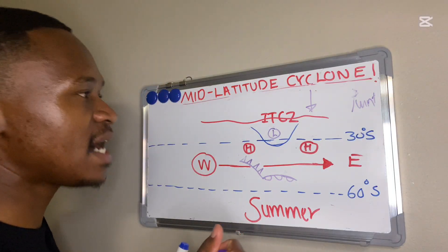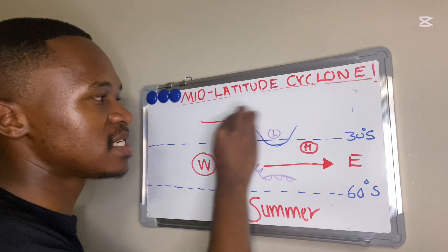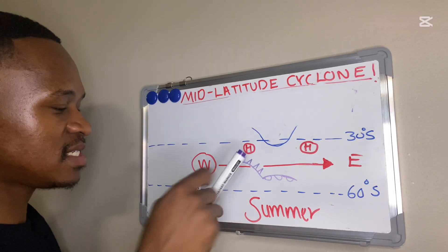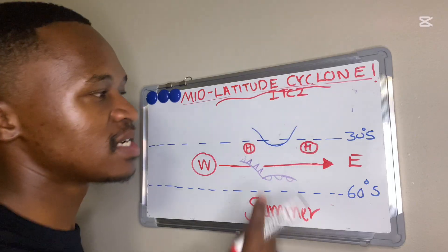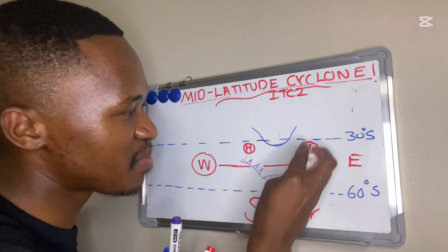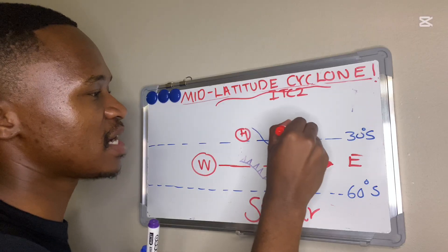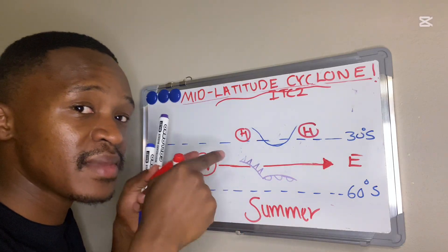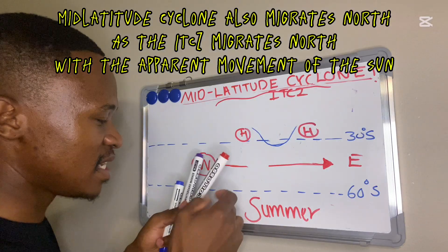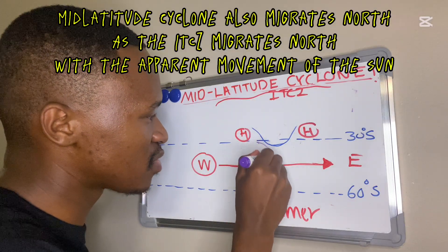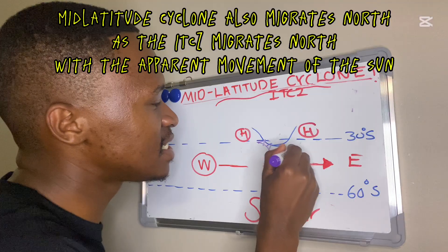In winter, our ITCZ migrates north. As the ITCZ migrates north, our high-pressure belts also migrate north, allowing our mid-latitude cyclone to also migrate north. As it migrates north in winter, that's when it has an effect on South Africa. Here's the position of the mid-latitude cyclone — it has migrated north following the ITCZ.